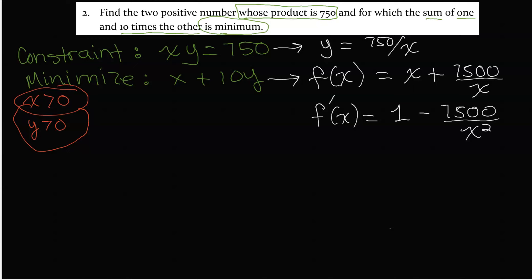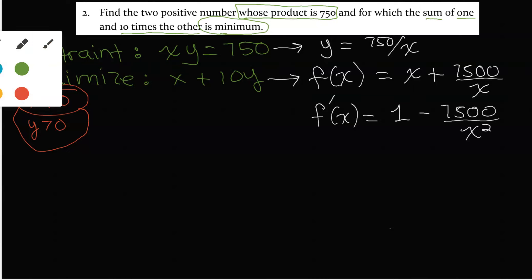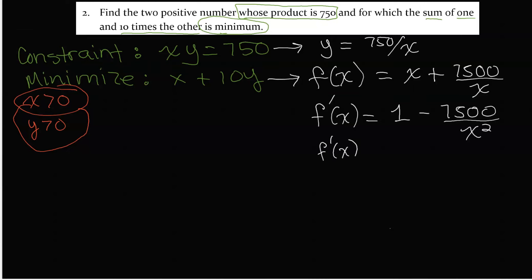When X is greater than 0, this is always defined, so the critical point, meaning f'(x) equals 0, is when 1 minus 7500 over X squared equals 0, or we would say 7500 over X squared equals 1.